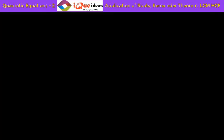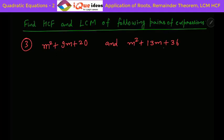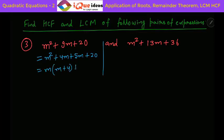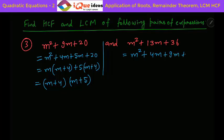Let us take the third question: m square plus 9m plus 20 and m square plus 13m plus 36. Factorize the first — 4 into 5 is 20 and 4 plus 5 is 9, so it is m square plus 4m plus 5m plus 20, giving m plus 4 into m plus 5. For the second — 4 into 9 is 36 and 4 plus 9 is 13, so it is m square plus 4m plus 9m plus 36, giving m plus 4 into m plus 9.